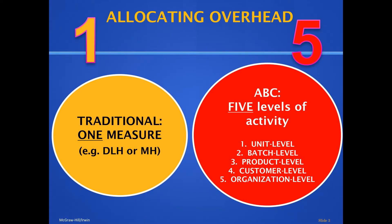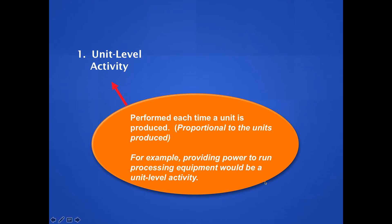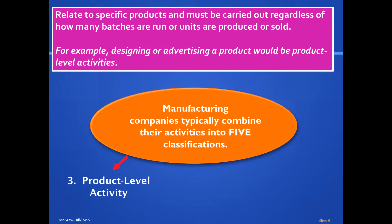In previous chapters there was one overhead activity — whether direct labor hours or machine hours — just one cost driver. In ABC costing there are five: unit level, batch level, product level, customer level, and organizational level. I've described an example of each of these in the notes section of the PowerPoint.